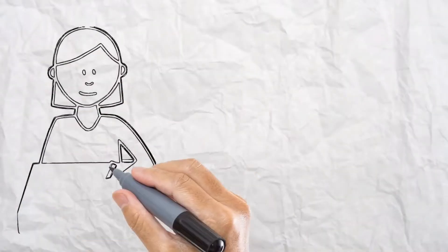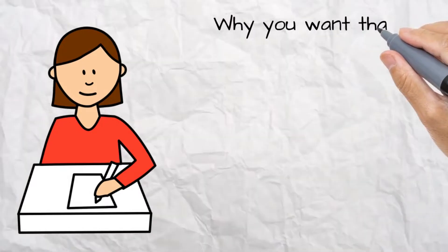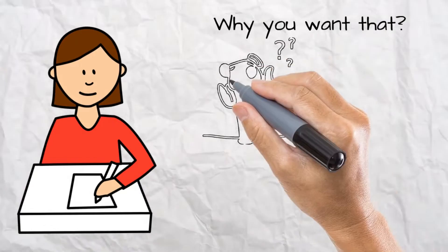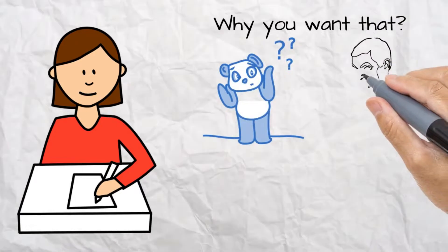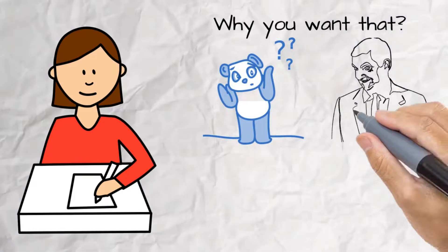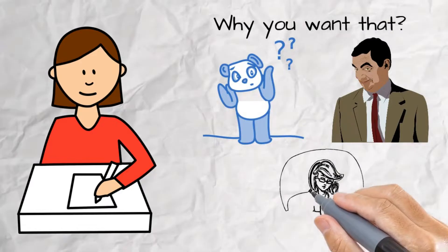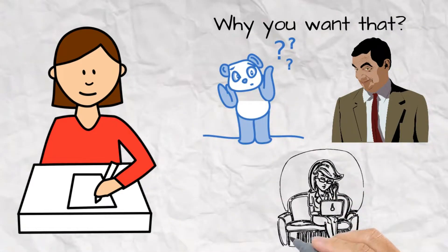When you have answered that question, you then need to ask yourself why you want what you want. This is very important as many people want something but don't really know why they want it. In the case of the movie, your answer might be that your favorite star is in it. For the internet business, you might answer that you want to work from home so you can spend more time with your family.